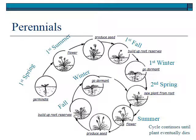The most common kind of rangeland plants are perennials. They germinate at some point and may persist vegetatively for quite a few years, but at some point they produce a flower. Then they go dormant over the winter, produce new growth in the spring, flower, produce seeds, go dormant again — and on and on. They have this cycle of every year producing either vegetative growth and seeds, then going dormant over the winter.